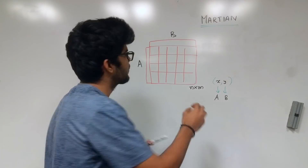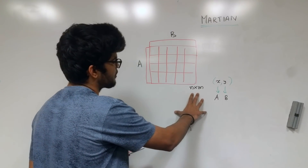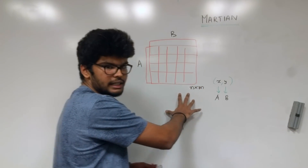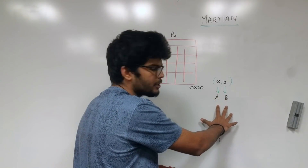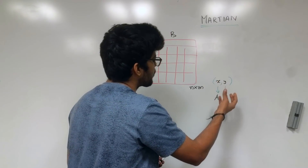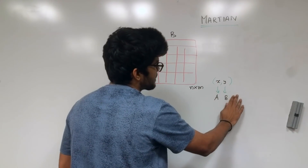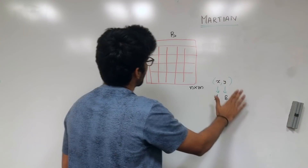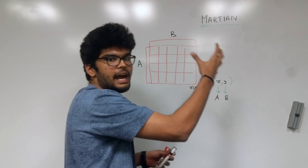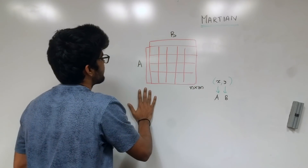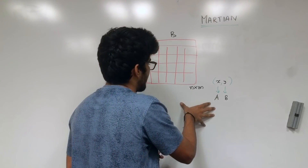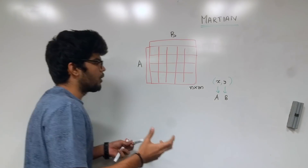So this is the problem statement. We are given a grid of size n cross m, which means we have n rows and m columns. Each cell of the grid contains two values x and y, of which x represents the amount of mineral of type A and y represents the amount of mineral of type B. On the topmost end of this grid we have a mine of mineral B, and on the leftmost end we have a mine of mineral A.